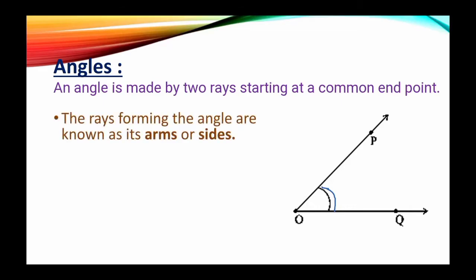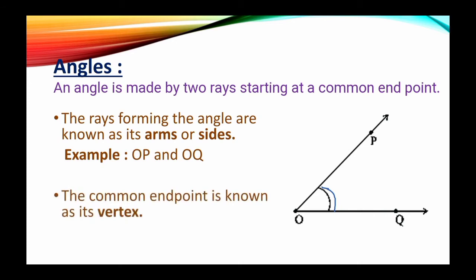The rays forming the angles are known as arms or sides. Here OP and OQ are known as the arms or sides. The common end point is known as vertex. Here the rays OP and OQ meet at common end point O. So you can say that O is the vertex of this angle.